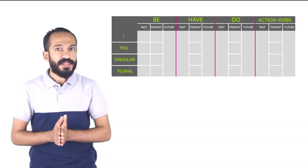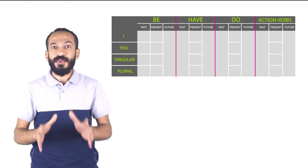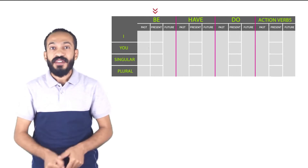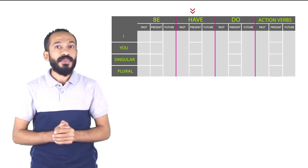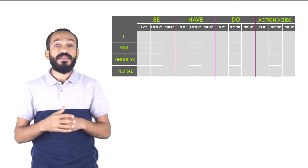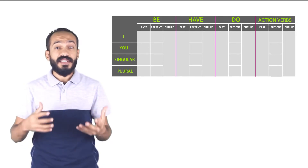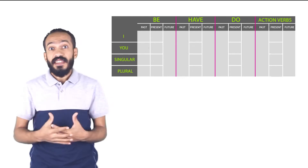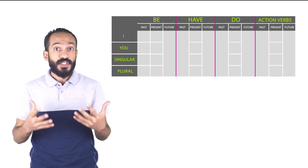What about the verbs? We are going to divide the verbs also in four different categories. Number one is verb to be, number two is verb to have, number three is verb to do, and number four — all the different action verbs, the things we do like run and eat and sleep and go and come and study and write and think, and all these kind of action verbs.